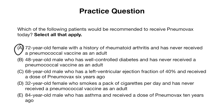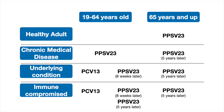Answer choice B: a 48-year-old male with well-controlled diabetes who has never received a pneumococcal vaccine as an adult. This patient is not yet 65, but he does have a chronic medical condition — diabetes — so he would be eligible for Pneumovax at this time. Patients with any chronic medical condition receive Pneumovax between 19 to 64 years of age and then a second dose at 65 and up.